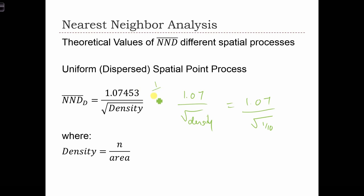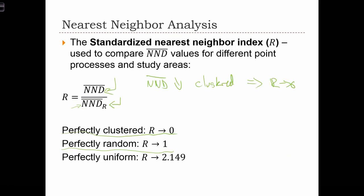In the random case, you have 1 over 2 root density, and this is much larger than that because the numerators are almost the same, but here you've got a 2 and here you don't. So the nearest neighbor distance in the random case is smaller than in the uniform case.